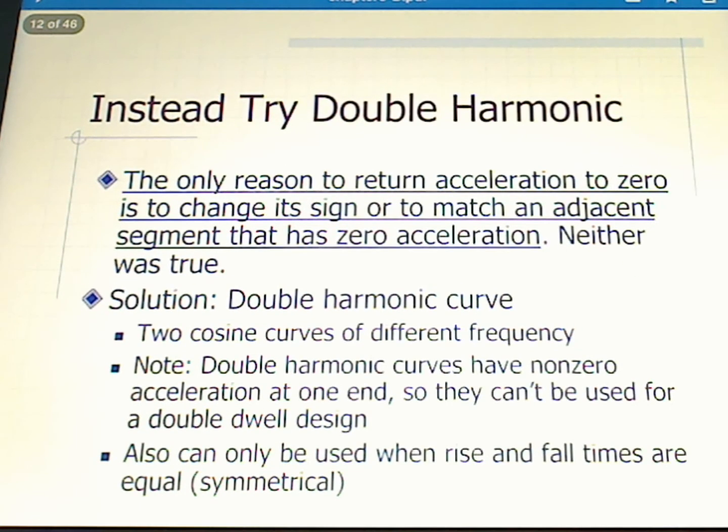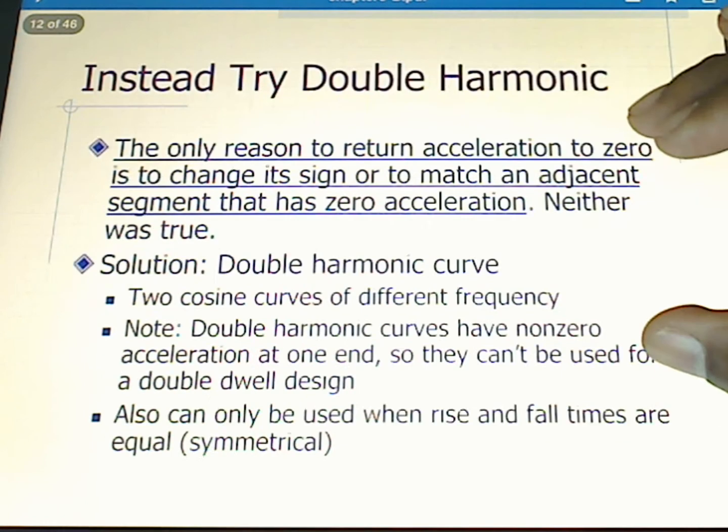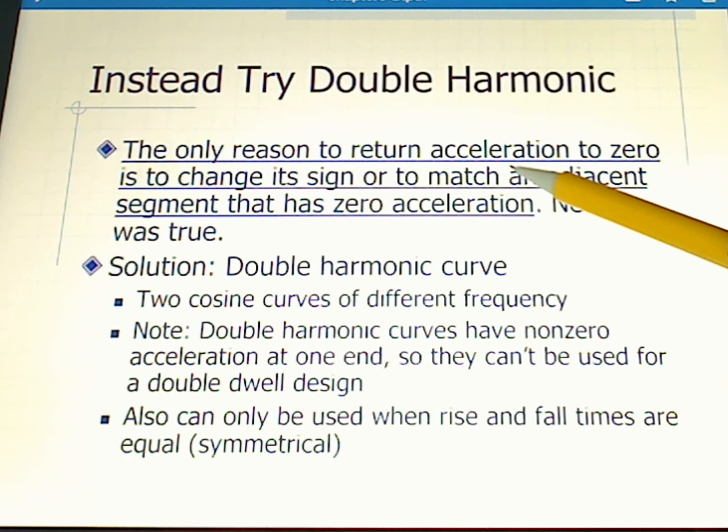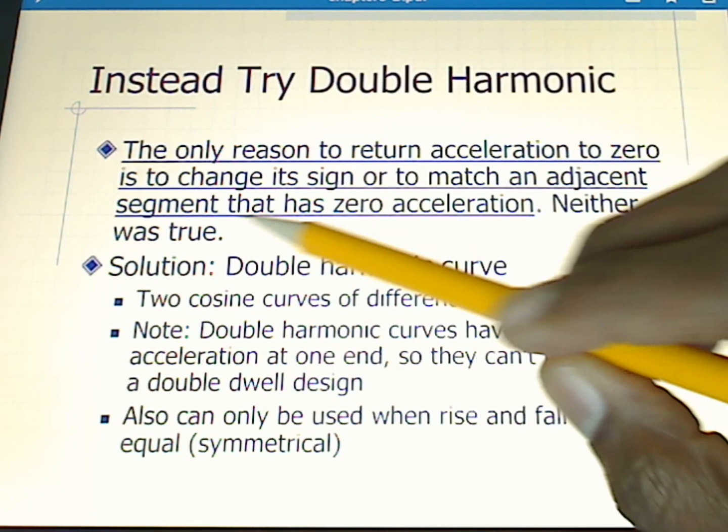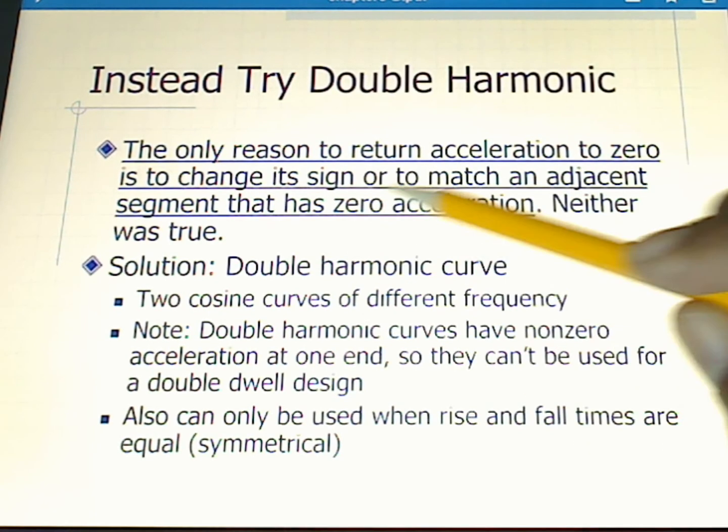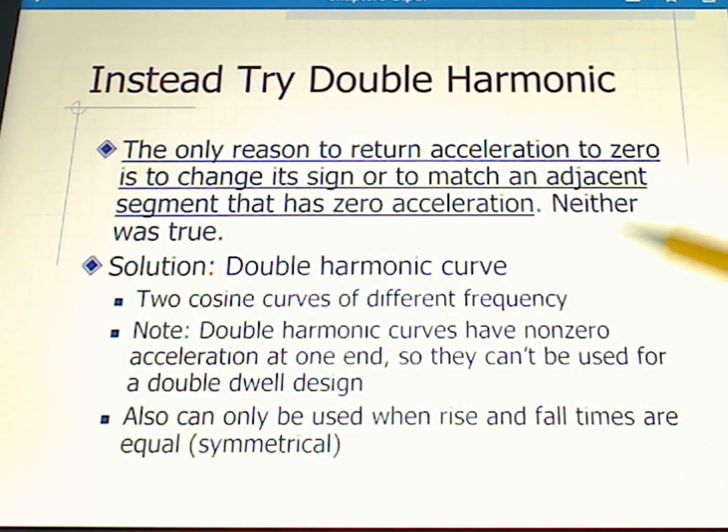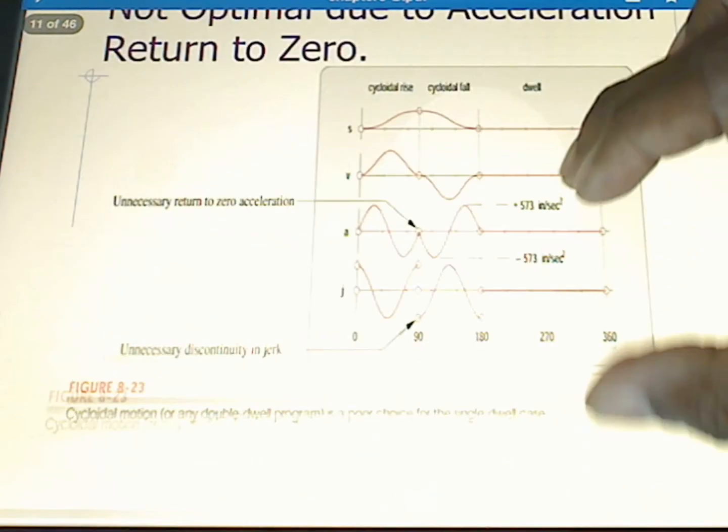So instead we're going to try a double harmonic. It's important that we state here that the only reason to return acceleration to zero is to either change its sign or to match an adjacent segment that has zero acceleration. Neither was true in this case, and so again let's go back and look at that acceleration curve.